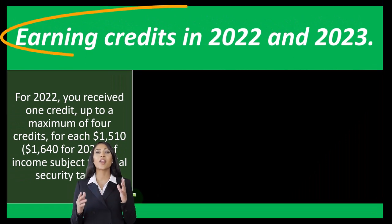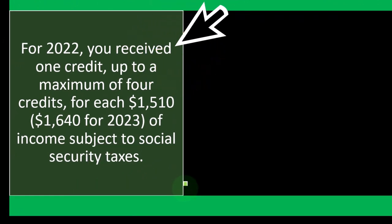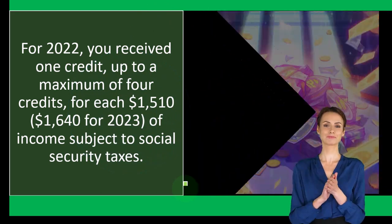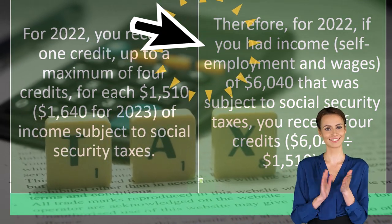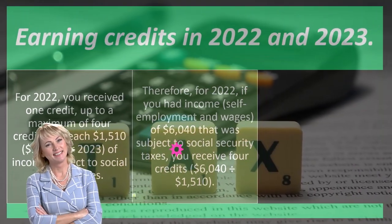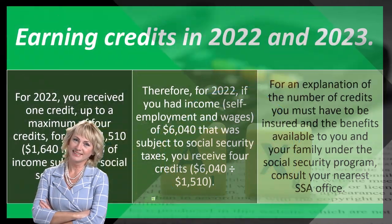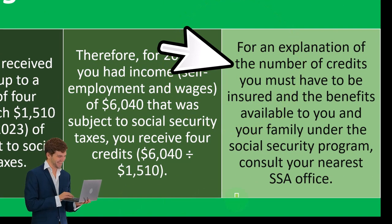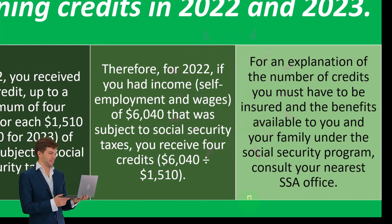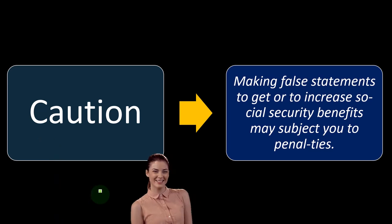Earning credits in 2022 and 2023: for 2022, you receive one credit — up to a maximum of four credits — for each $1,510 of income subject to Social Security tax ($1,640 for 2023). So for 2022, if you had self-employment income and wages of $6,040 subject to Social Security tax, you receive four credits ($6,040 divided by $1,510). Consult your nearest SSA office for details on the number of credits required and available benefits.